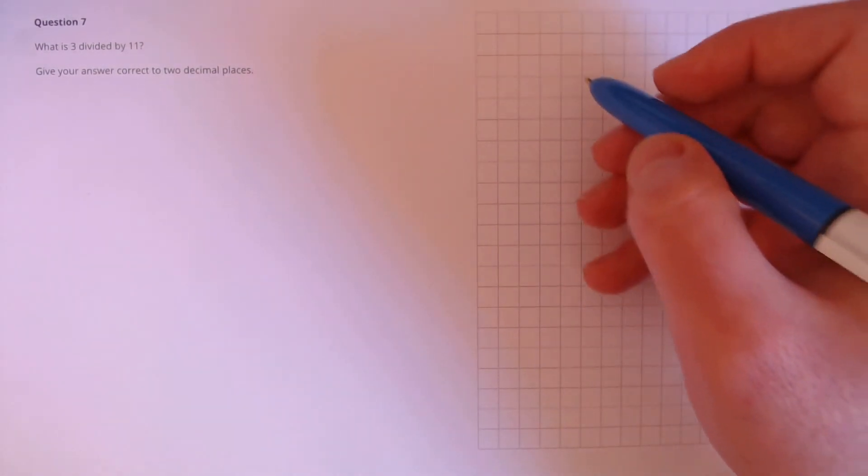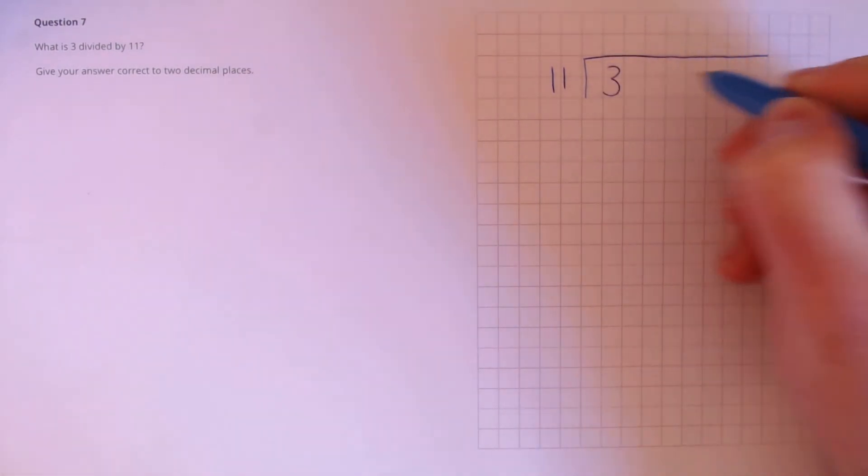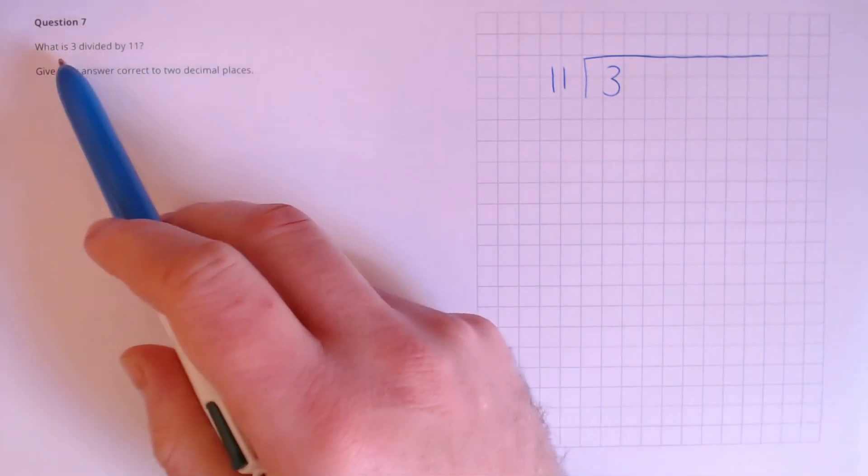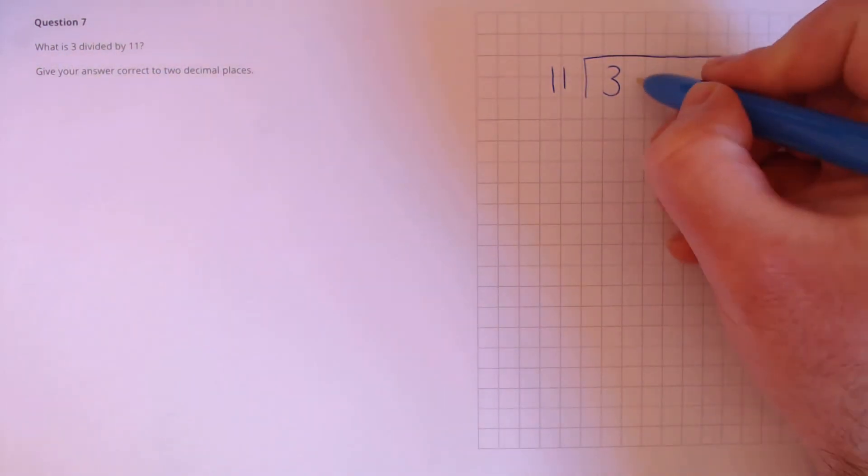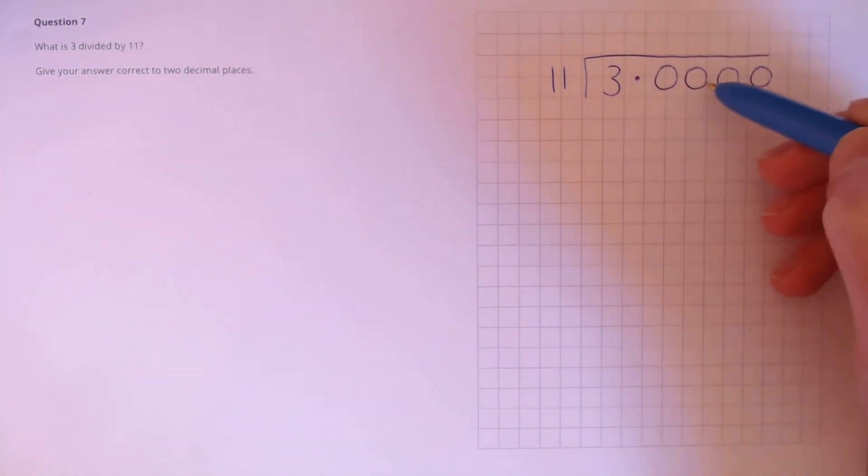Question 7. What is 3 divided by 11? Give your answer correct to two decimal places. To do this, we're going to use short division. So, there's 11 on the outside, and here's 3 on the inside. We know this number is going to be less than 1, because we've got a fraction, 3 over 11. So, just to help us out, I'm going to put in the decimal places here. 3.0000, which is the same as 3.